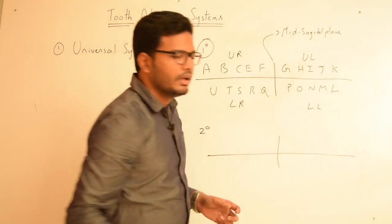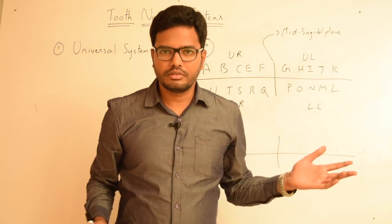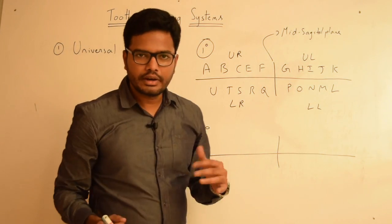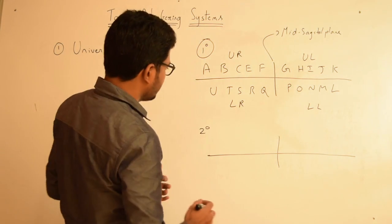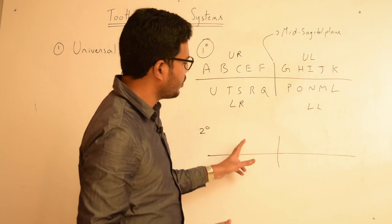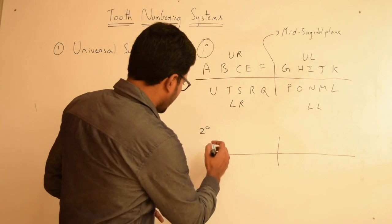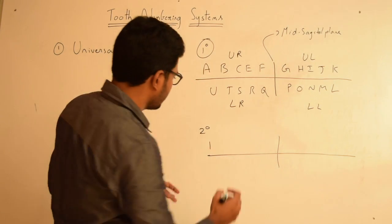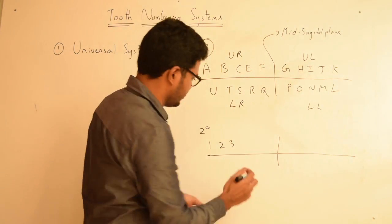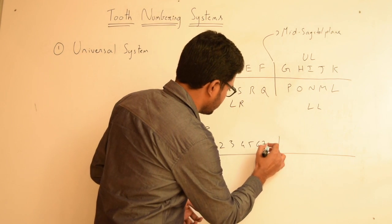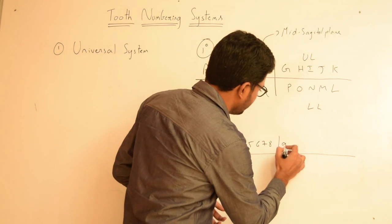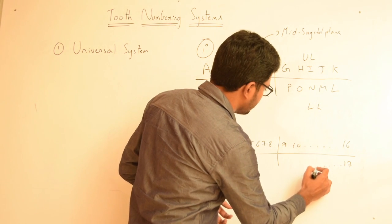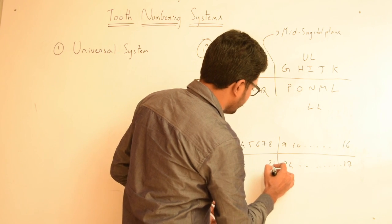Since we have 32 permanent teeth, we can't use alphabets to represent them — we only have 26 alphabets — so numbers are used instead. The arrangement is more or less the same: we proceed in a clockwise direction starting with number one at the upper right third molar, and each quadrant has eight teeth. We go from 1 to 8, then 9 to 16, then 17 to 24, and then 25 to 32.